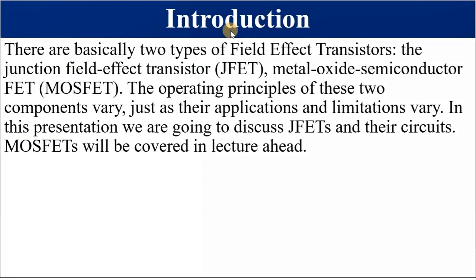Basically, we have two types of transistors: bipolar junction transistor and field effect transistor. There are two types of field effect transistors — the junction field effect transistor, in short JFET, and the metal oxide semiconductor field effect transistor, in short MOSFET. The operating principles of these two transistors are not the same; their applications and limitations also vary. In this video presentation, we are going to look at junction field effect transistors and their circuits. We'll cover MOSFETs in a separate lecture ahead.